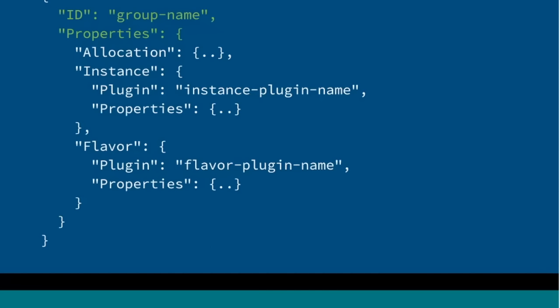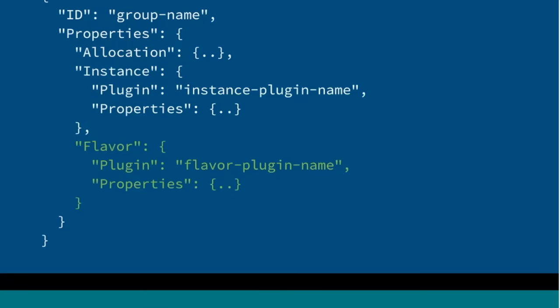In the case that you're using the default group plugin, you're going to see three other fields. The default group plugin requires an instance field, which defines how the instances as part of that group are created and managed. That pattern is sort of recursive — once again there's another plugin name and the details are abstract to the group plugin because it really doesn't need to know them. Similarly with the flavor, there's some flavor plugin responsible for setting up instances and some abstract configuration associated with that.